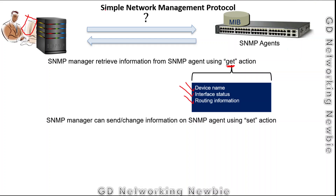The SNMP Manager can also set variables on the agents — for example, changing the status of an interface to up or down. This is done using the SET action, which allows the SNMP Manager to change information on the SNMP agent. So GET means retrieving information, while SET means changing or sending information to the SNMP agent.